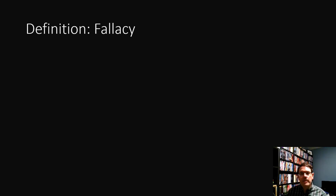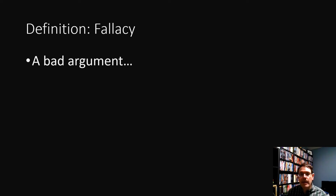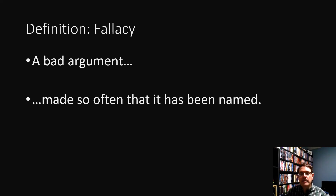When it comes to rational arguments, there are certain mistakes that people make when talking about ethics that are so common the mistakes have been given a name. These are called fallacies. A fallacy is a bad argument that is made so often that it has been given a name. There are many different fallacies, not all of which apply to moral arguments. In this video I'm just going to talk about ones that are specific to moral arguments.